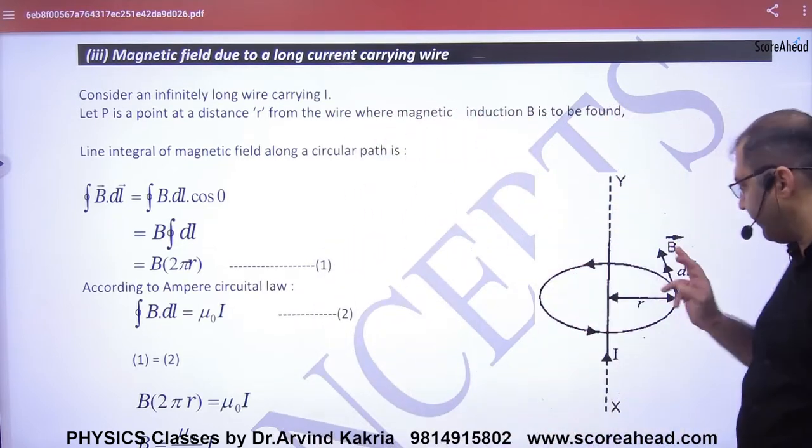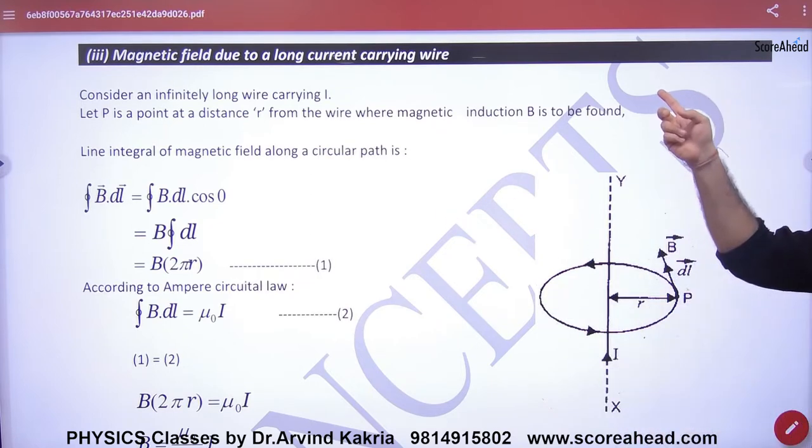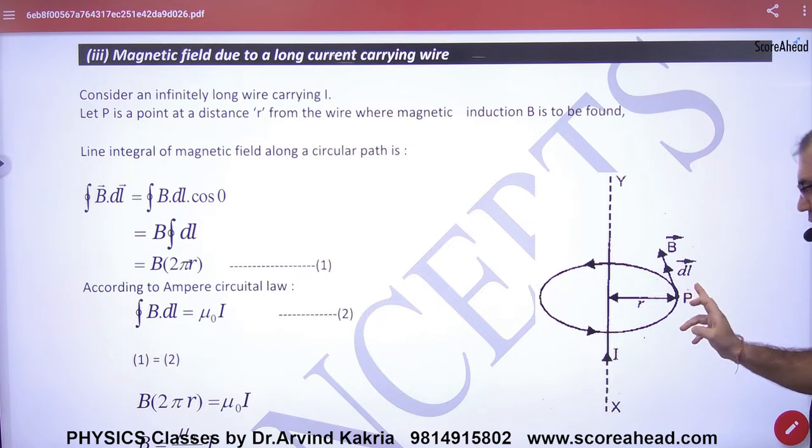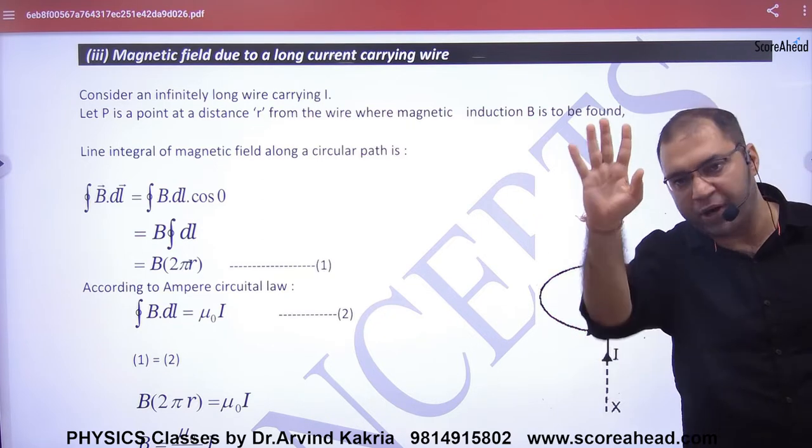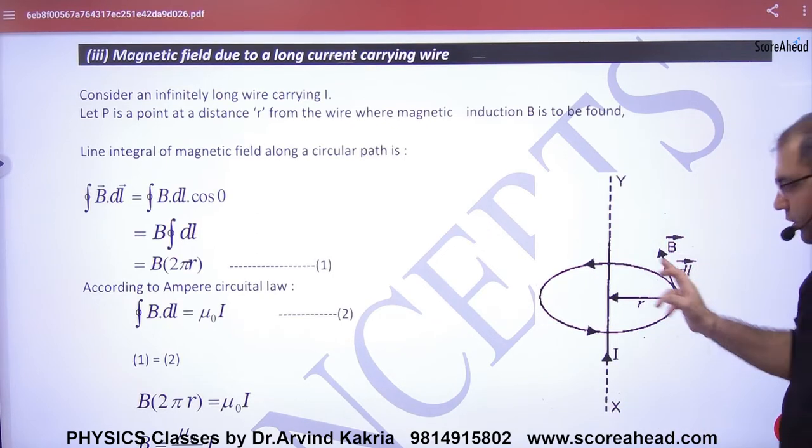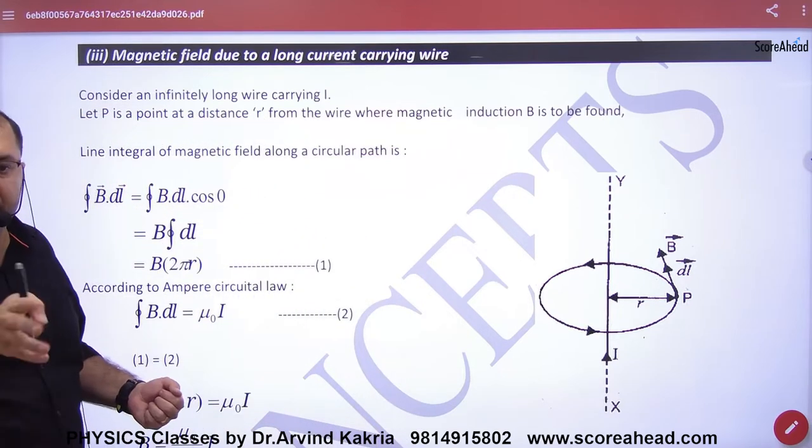You have to find the field at distance r, so pass a closed path—this is an imaginary path. Point number one: keep B and dl in one direction. Then B dot dl equals B into dl into the angle between B and dl.